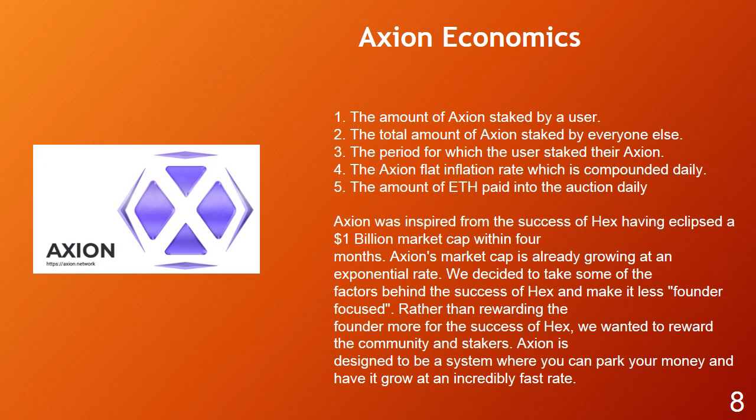Axion Economics. Axion generates interest through the idea of inflation. The Axion smart contract pays out Axion to reward stakers based on 5 basic principles: 1) the amount of Axion staked by a user; 2) the total amount of Axion staked by everyone else; 3) the period for which the user staked their Axion; 4) the Axion flat inflation rate, which is compounded daily; and 5) the amount of ETH paid into the auction daily.